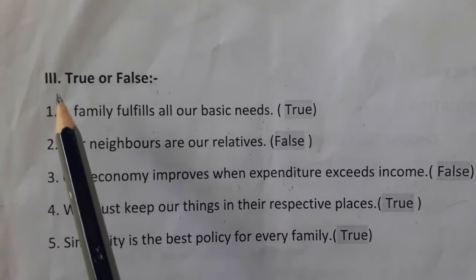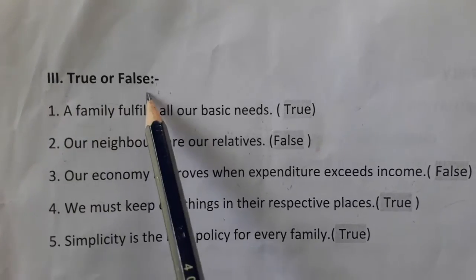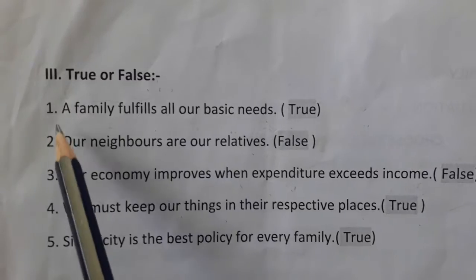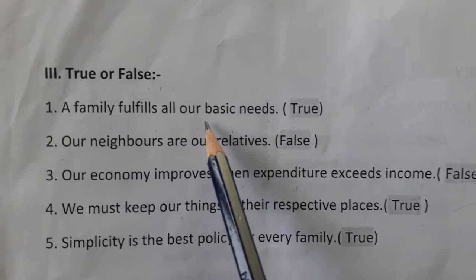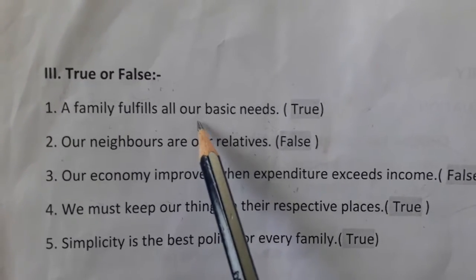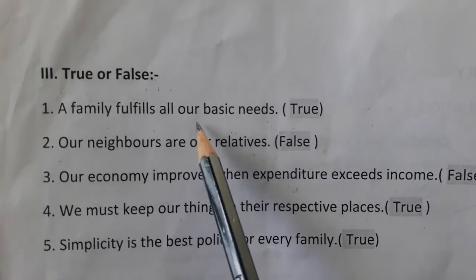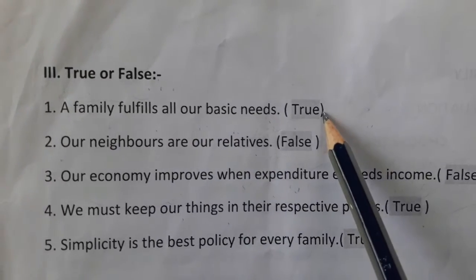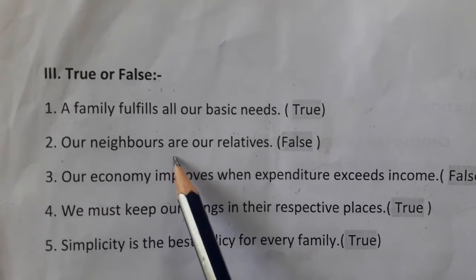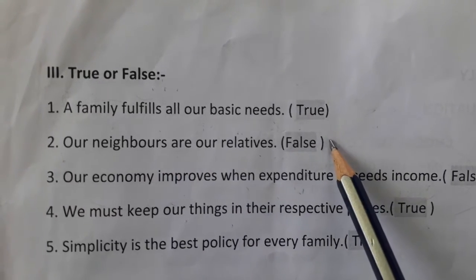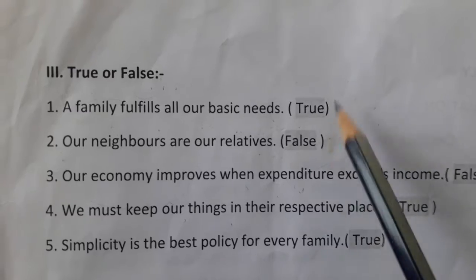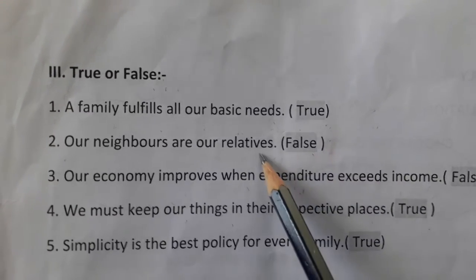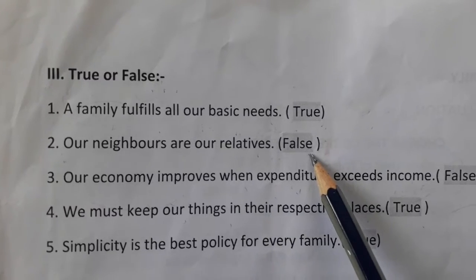Let's see Roman numeral 3, true or false. In this type of question, they will give a sentence. We have to read that sentence clearly, then answer: if the sentence is true, we write true; if the sentence is wrong, we write false. Only two options.